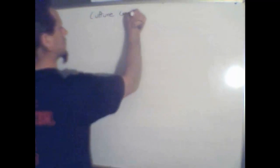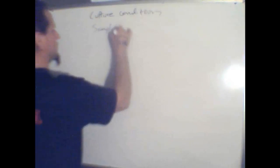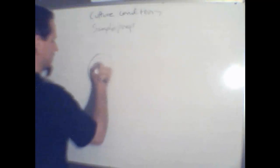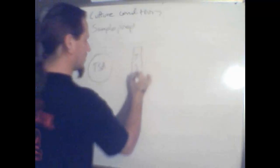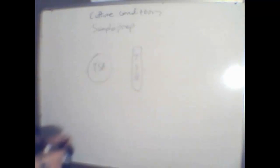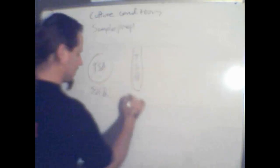We're in the early stages of doing that. Right now I'm looking at two different things: culture conditions and sample preparation. For culture conditions, we're growing cells on tryptic soy agar and growing cells in tryptic soy broth — solid versus liquid.